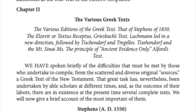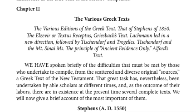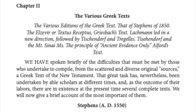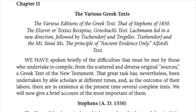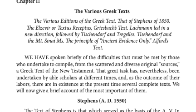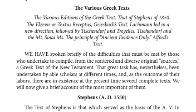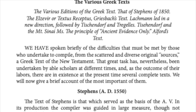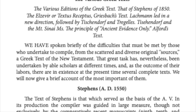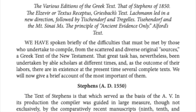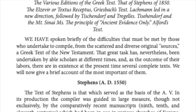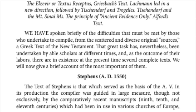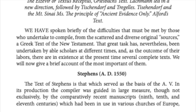Chapter 2: The Various Greek Texts. The various editions of the Greek text — that of Stevens of 1550 and the Elzevir or Textus Receptus, Griesbach's text, Lachmann — led in a new direction, followed by Tischendorf and Tregelles. The Principle of Ancient Evidence Only. We have spoken briefly of the difficulties that must be met by those who undertake to compile from scattered and diverse original sources a Greek text of the New Testament. That great task has nevertheless been undertaken by able scholars at different times, and as the outcome of their labours, there are in existence several complete texts. We will now give a brief account of the most important of them.